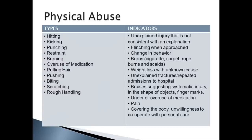It's important we look at indicators of physical abuse. These might include unexplained injuries not consistent with a person's explanation, people flinching when you approach them, certain changes in behaviour, and physical signs such as burns — cigarette burns, carpet burns, rope burns, and scars.